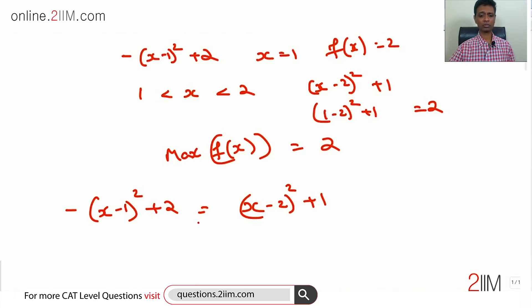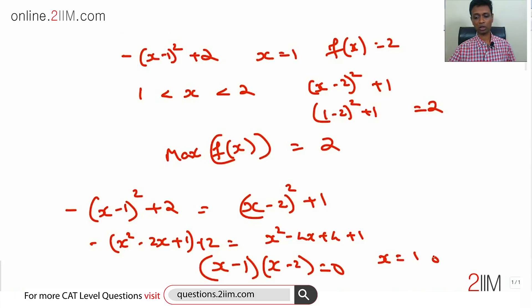Find when they are equal: -(x² - 2x + 1) + 2 equals x² - 4x + 4 + 1. This will finally simplify to the same (x-1)(x-2) equal to 0, so x is 1 or x is 2. Substitute 1 and 2, whichever is the maximum value, that is your answer. One of the two will be higher.